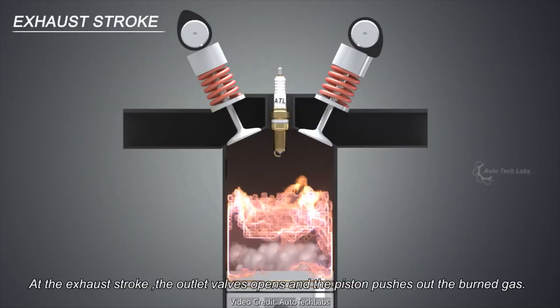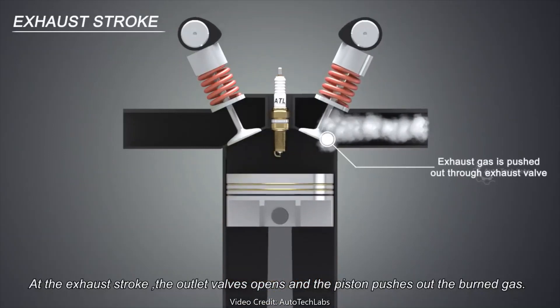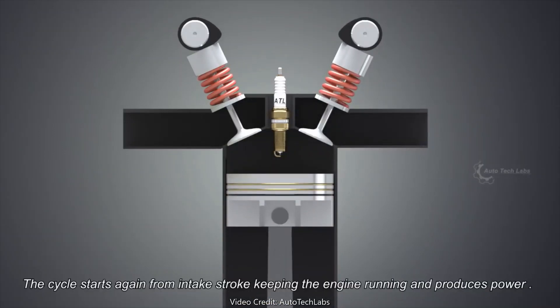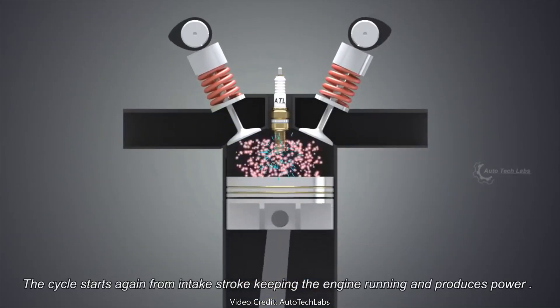At the exhaust stroke, the outlet valve opens and the piston pushes out the burned gas. The cycle starts again from intake stroke, keeping the engine running and producing power.